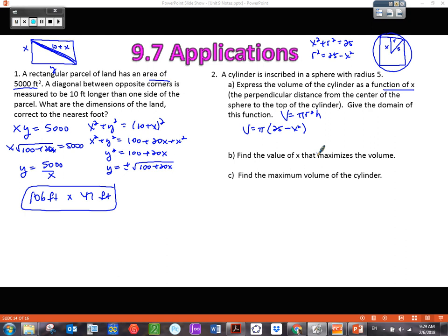My last task is to get rid of the h. Let's think about that. The height of the cylinder, see how this part of it is x. So what would the total height be? It would be 2x, right, because it says it's from the center and up. So it's 2x.